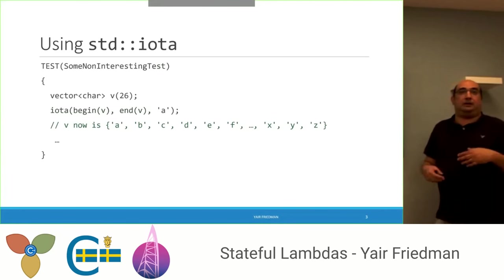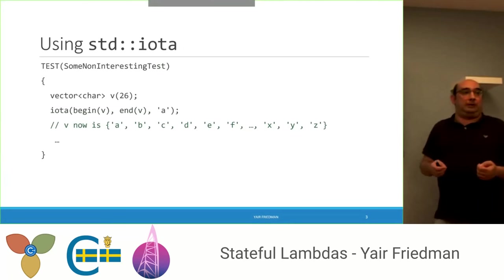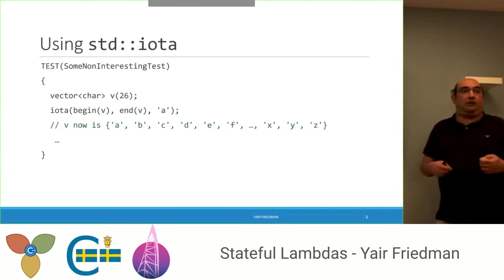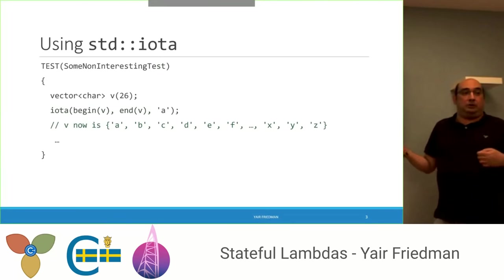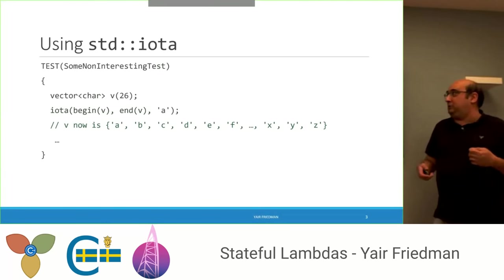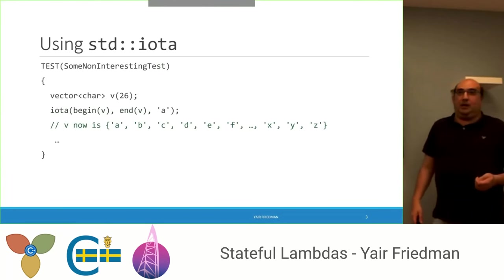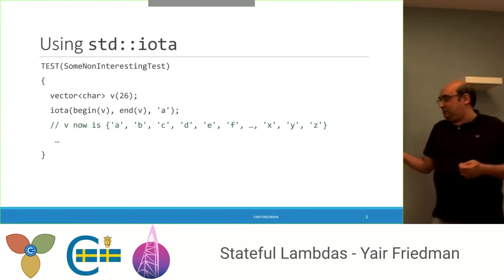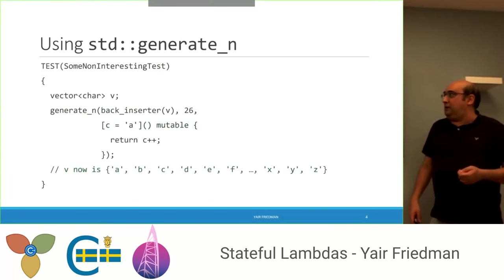But if you want to do something more complex — a more complex initialization of our vector — we would need to use something else. This is where our stateful lambda comes in.